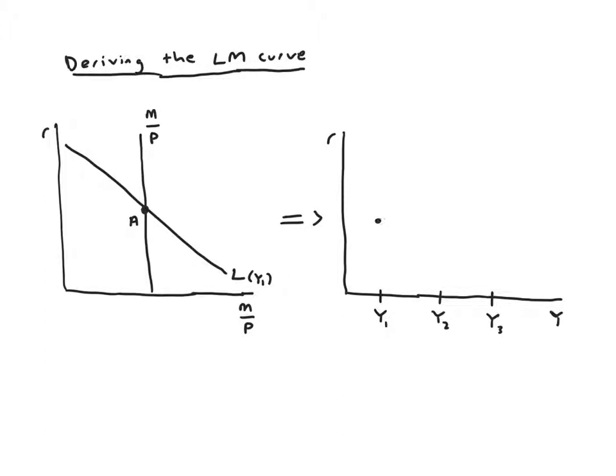And at income level y1 we have a certain interest rate A and that gives us this combination of interest rate and income on the right that I've labeled, so that's point A.